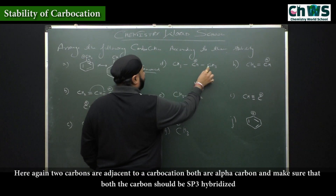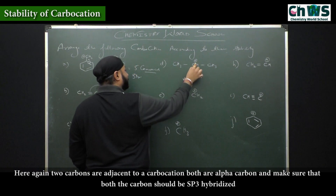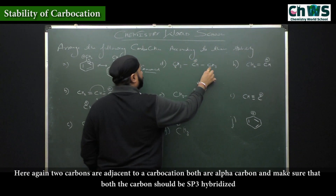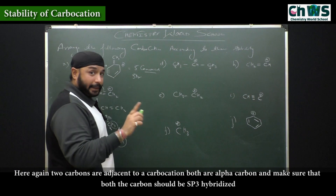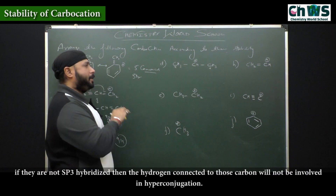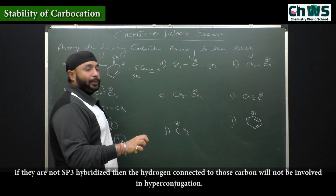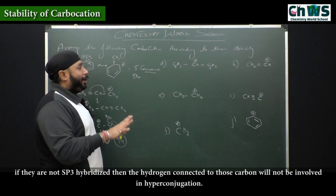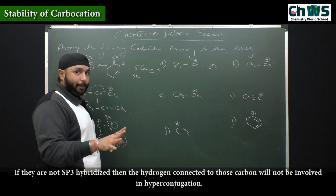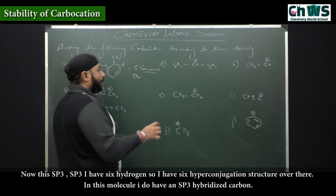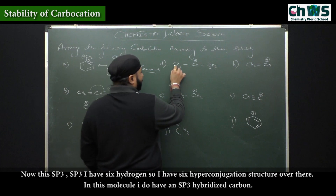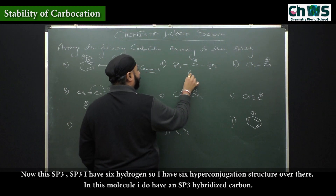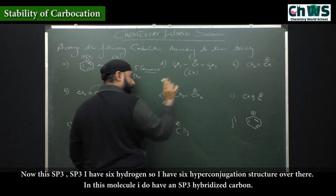Again, two carbons are adjacent to this carbocation — both are alpha carbons. Make sure that both carbons should be sp3 hybridized; if they are not sp3 hybridized, the hydrogens connected to those carbons will not be involved in hyperconjugation. Here both are sp3, so I have six hydrogens, giving me six hyperconjugation structures.